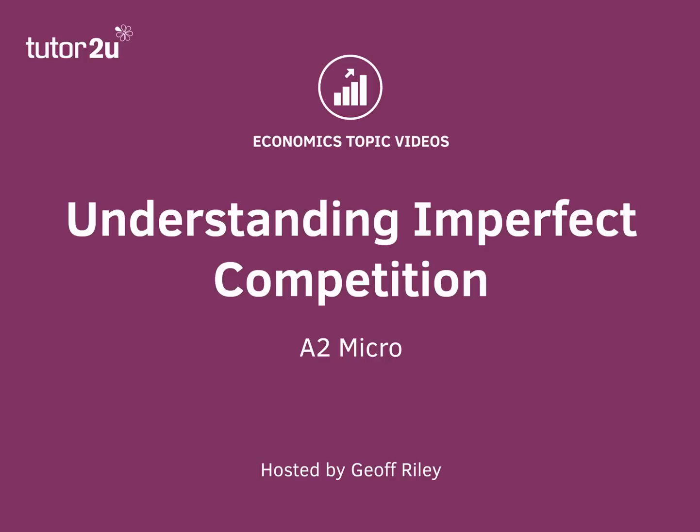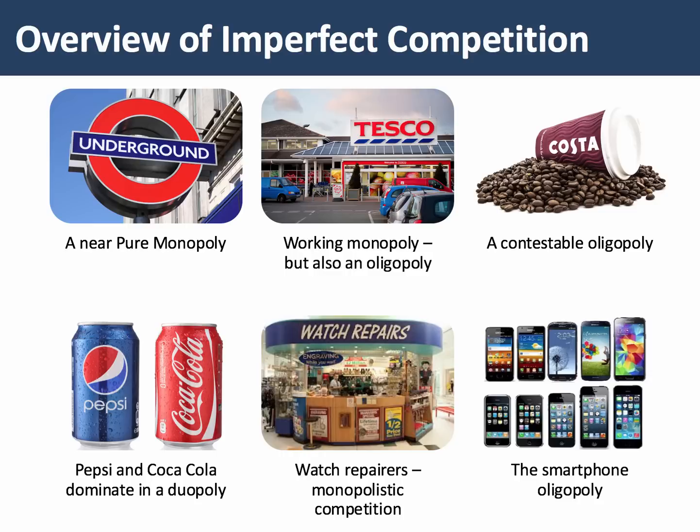Hi there. In this short A2 Micro revision video, we're going to take a few minutes to think about imperfect competition. Imperfect competition is any market structure which deviates from the strict assumptions of perfect competition. In other words, it's virtually every market you can ever encounter.